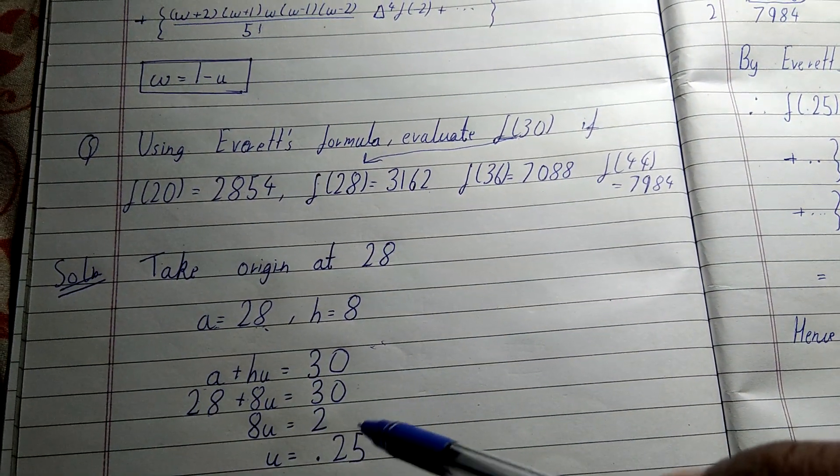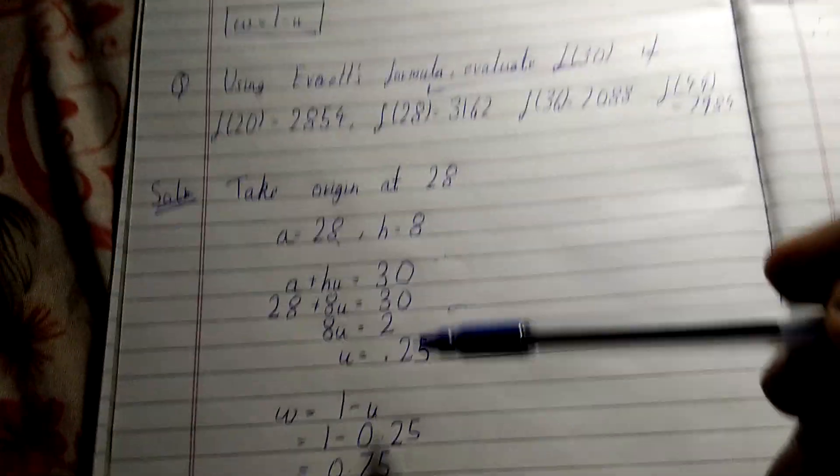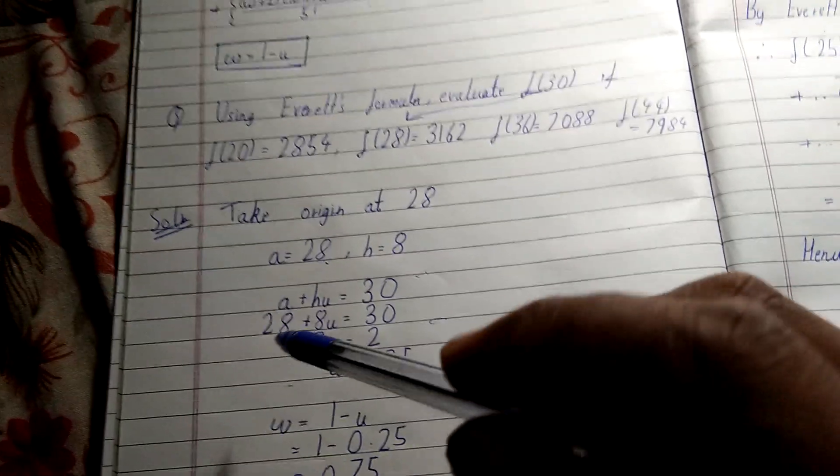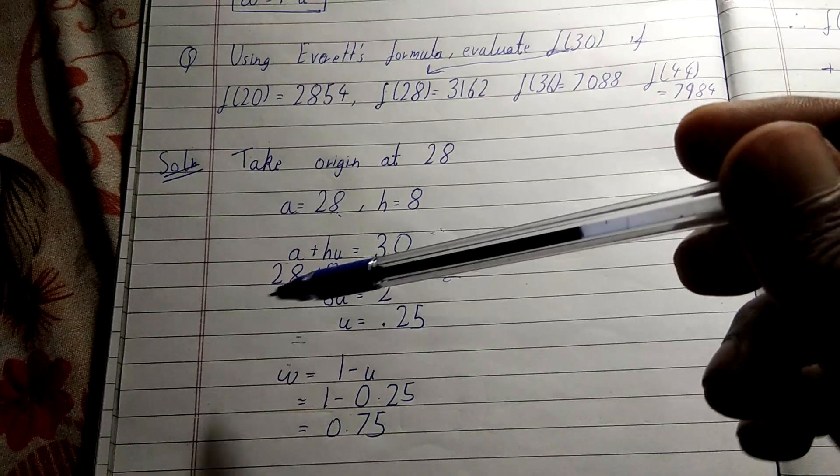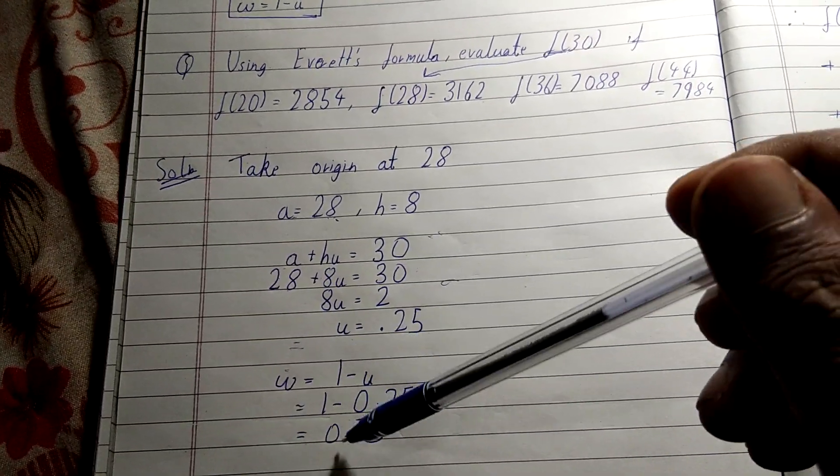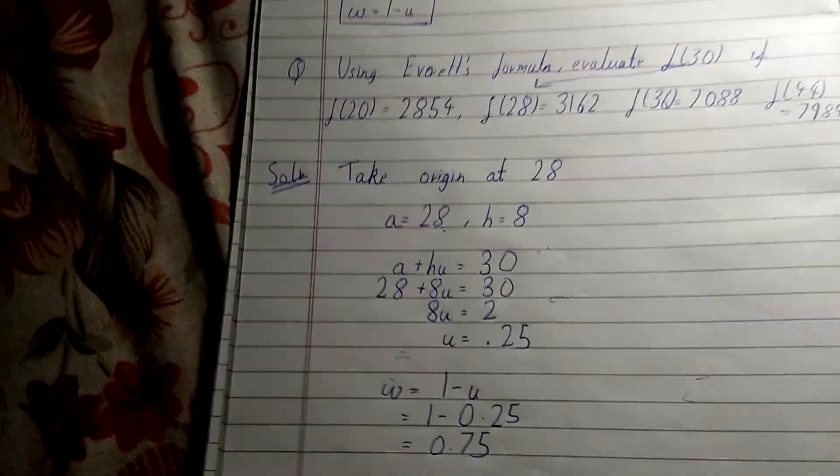So we got u. Now we have to find w. This is the new term in this Laplace-Everett formula. W = 1 - u = 1 - 0.25 = 0.75. So till here it is not tough, and believe me, it will not be tough after this also.